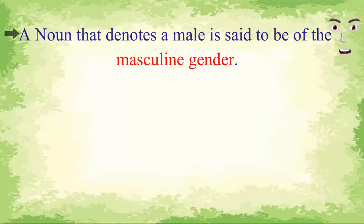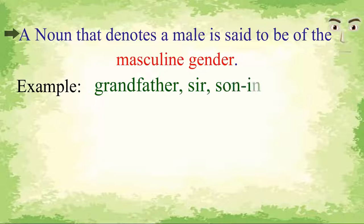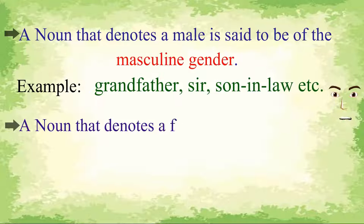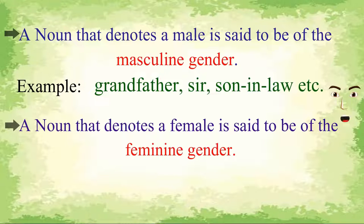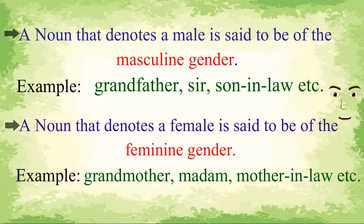A noun that denotes a male is said to be of the masculine gender — for example, grandfather, sir, son-in-law, etc. A noun that denotes a female is said to be of the feminine gender — for example, grandmother, madam, mother-in-law, etc.